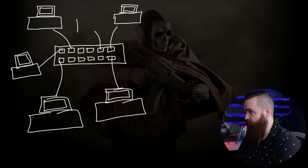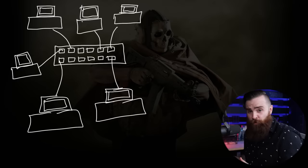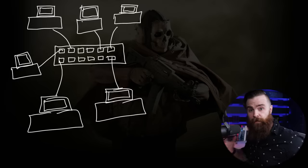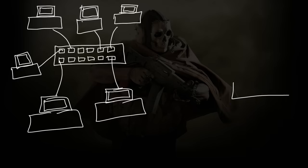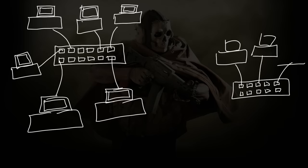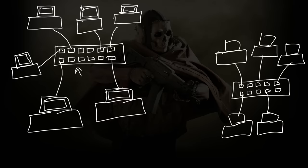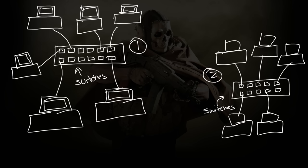This is a network, and a switch facilitates that. All these computers are connected together, inter-networked, having a blast. Now, a switch can only handle so much before there are too many computers talking at once. So what do we do? We get another switch. We connect more computers — and now we essentially have two networks: network one and network two. But what if Bob over here wants to play a game with Mark and they're not connected together? How do we solve that problem? That's where routers come in.